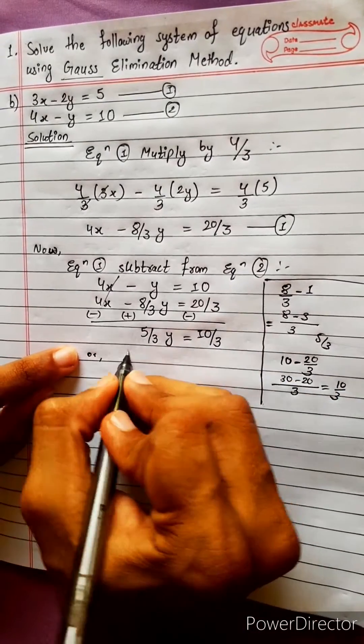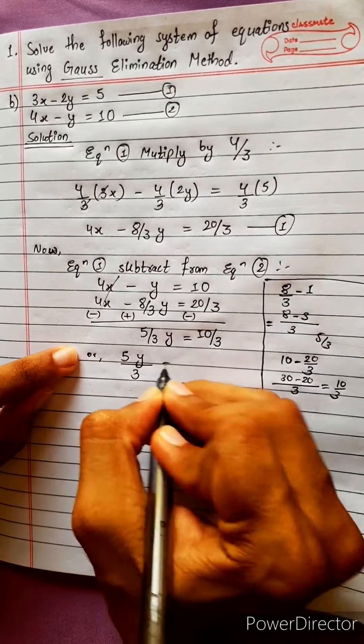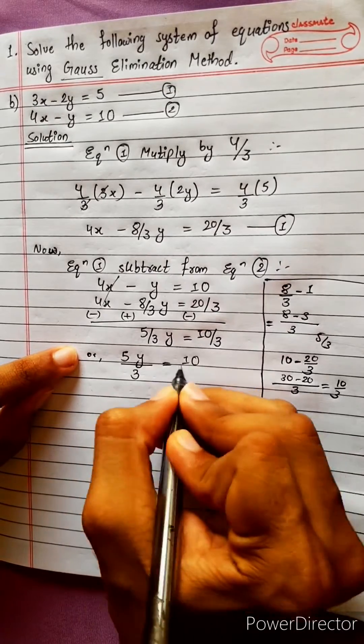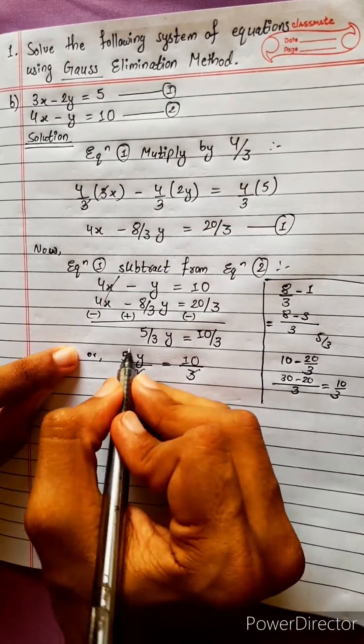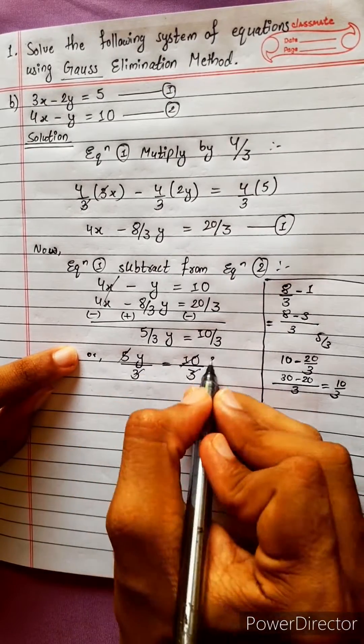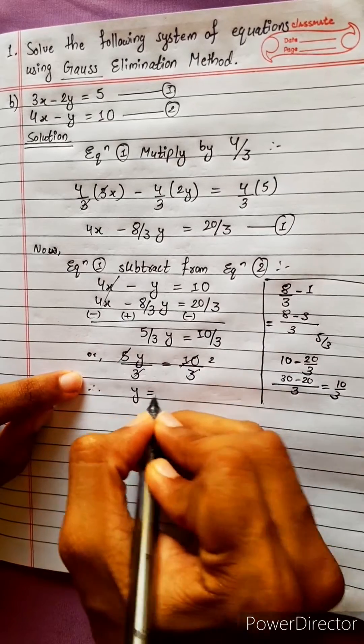So 5y/3 equals 10/3. The 3s cancel, and 5y equals 10, therefore y equals 2.